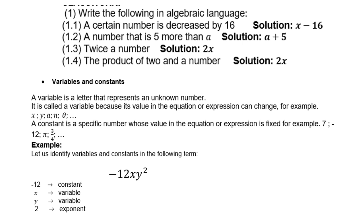Variables and constants. A variable is a letter that represents an unknown number. It is called a variable because its value in the equation or expression can change. For example, x, y, a, n, theta, and so forth.